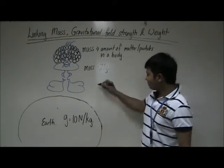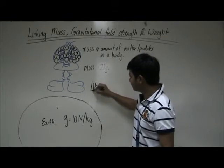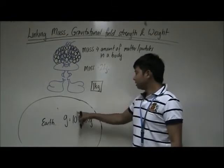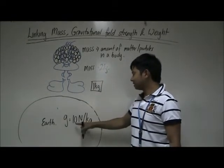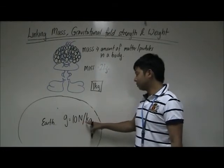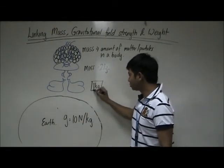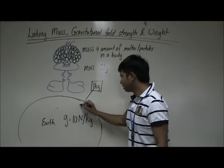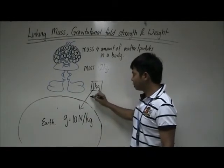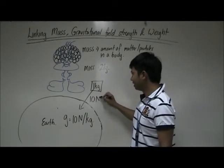It means that if I have a 1 kg of mass, the Earth, because of its size and its gravitational field strength of 10 Newton per kg, is gonna pull this 1 kg mass towards itself with a gravitational force of 10 Newton.